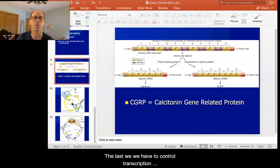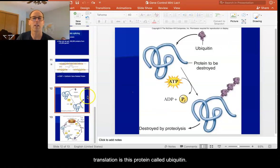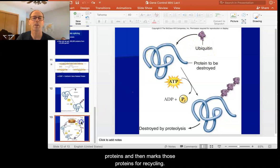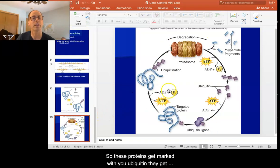Now the last way we have to control transcription translation is this protein called ubiquitin. So this purple thing is ubiquitin. What it does is it sticks to proteins and then marks those proteins for recycling. So these proteins get marked with ubiquitin. They get transported to a structure in the cell that breaks down or degrades that protein. And we get these polypeptide fragments that then can be turned back into other proteins. So again, this is a post-translational thing.